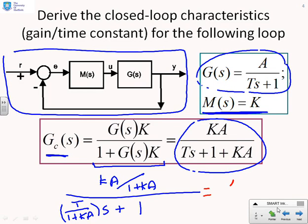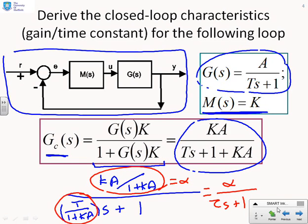So now what we've got, I could call this alpha over τ s plus 1. The closed-loop system has a gain alpha and a time constant τ. This term on top is alpha and this term down here is τ. We can see a strong relationship between the open-loop gain capital A and the closed-loop gain KA over 1 plus KA, and the open-loop time constant T and the closed-loop time constant τ.